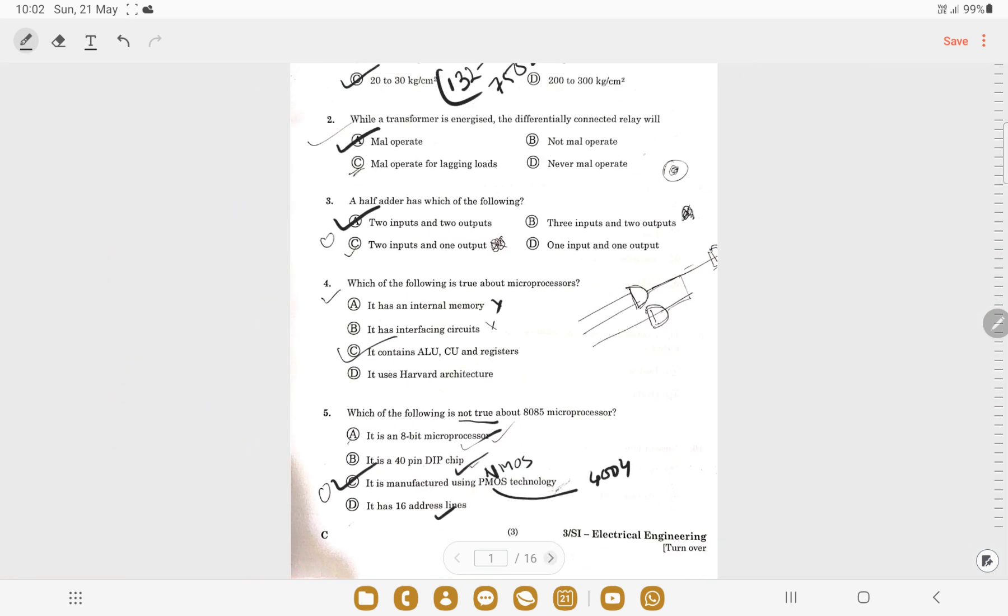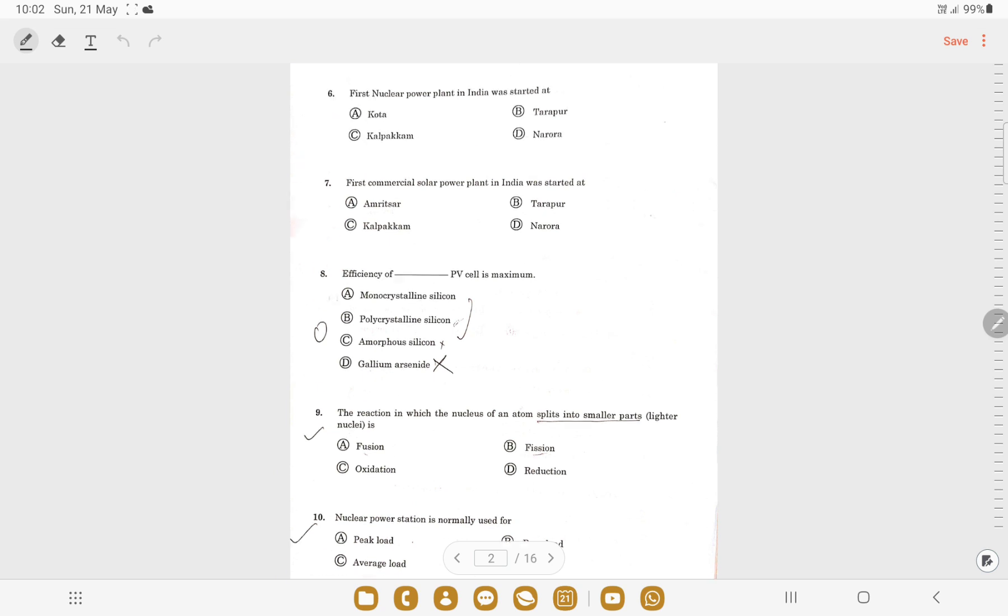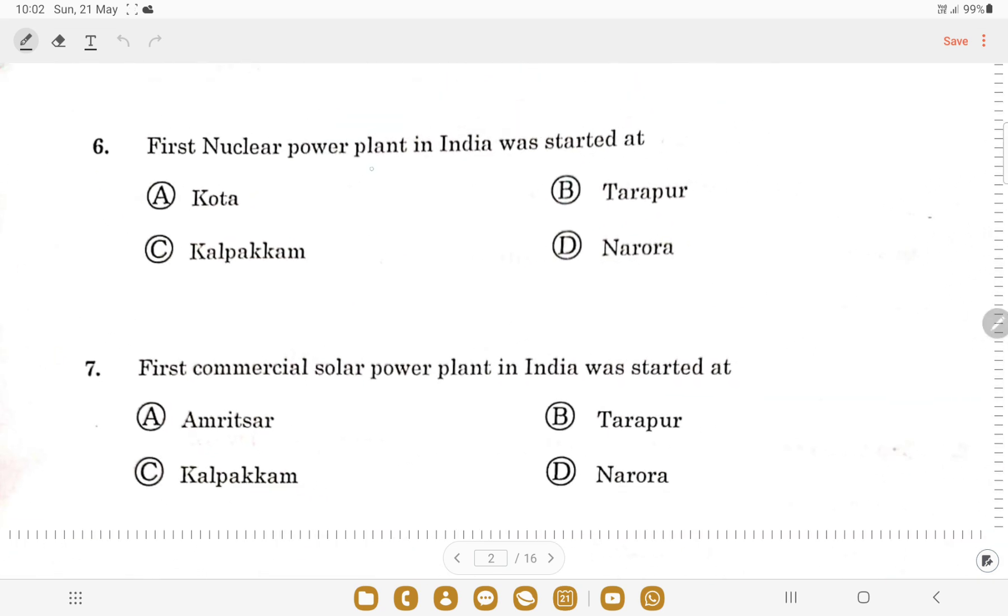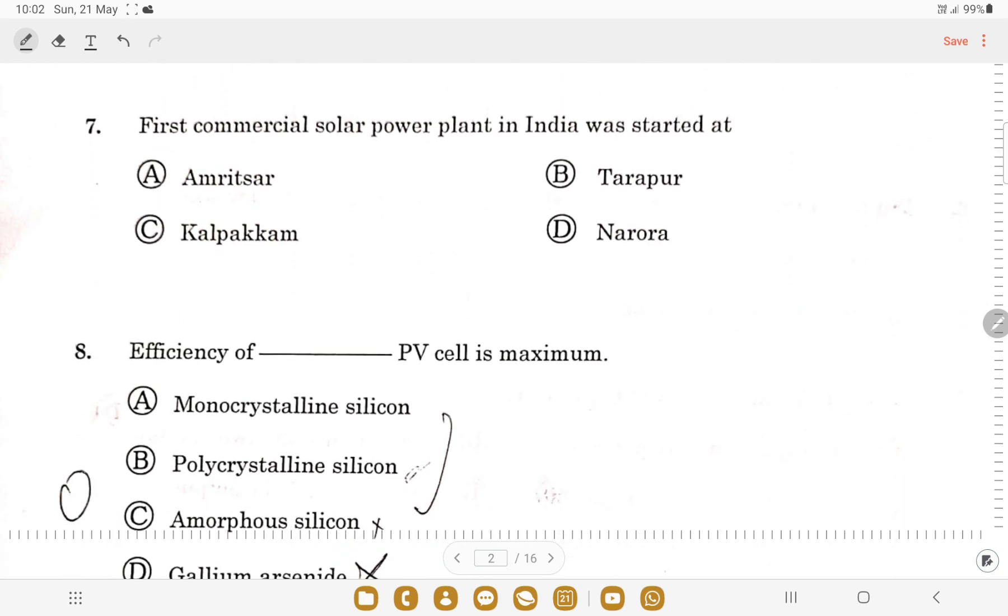Next question: first nuclear power plant in India was started at? It was started in Tarapur in 1969, so option B is the correct answer. First commercial solar power plant in India was started at Amritsar - option A is the correct one.